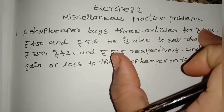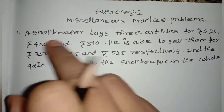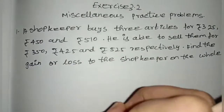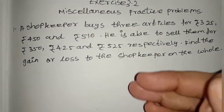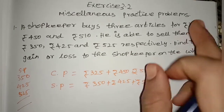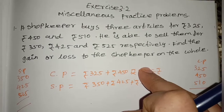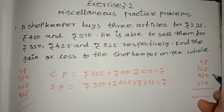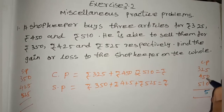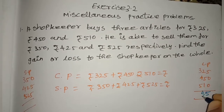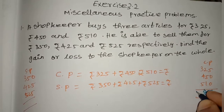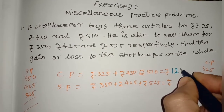Now, how do we find the cost price? We find the cost price. In the three articles, the purchase rate is 3 and we add to the cost price. The prices are 325, 450, and 510. Adding them: 5 plus 2 is 7, 7 plus 1 is 8. Next, 5 plus 4 is 9, 9 plus 3 is 12. Our total purchase rate — cost price — is 1285.